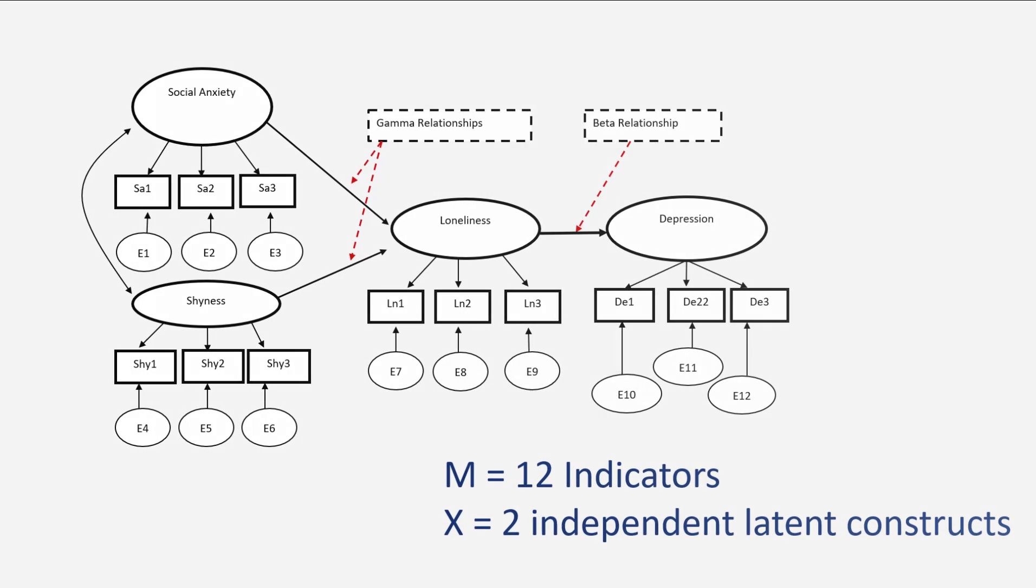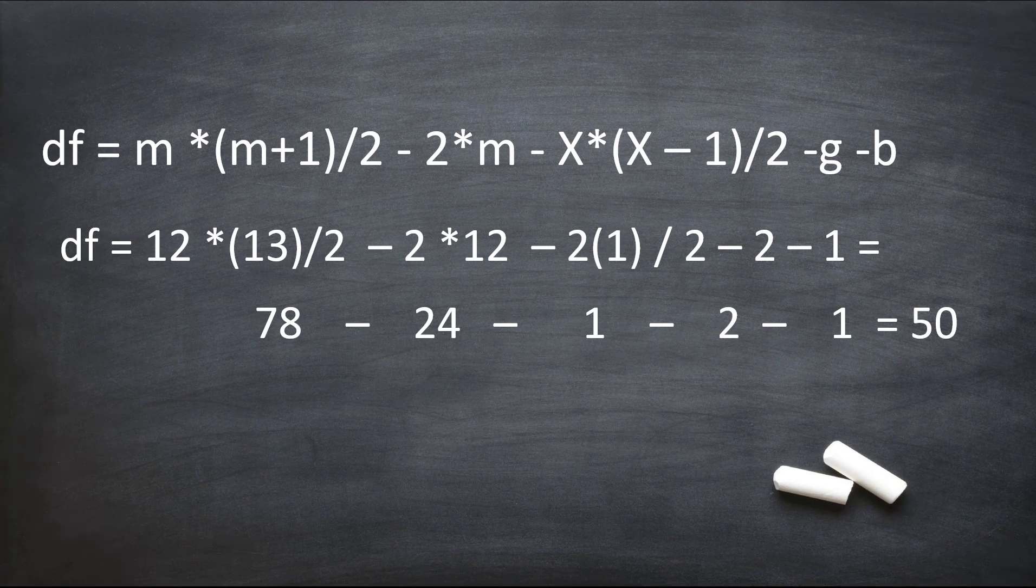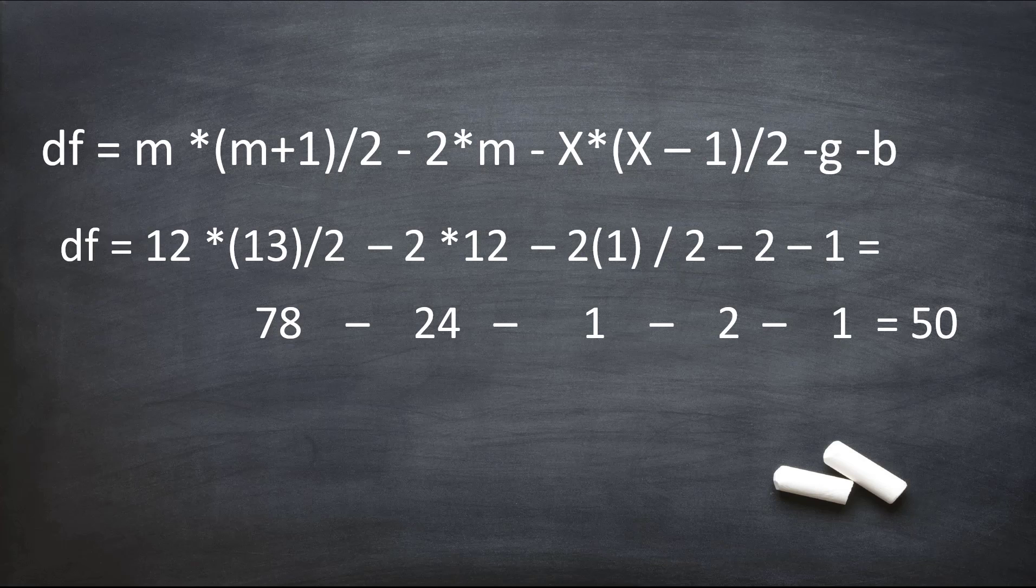Let's plug this into our formula. The front half looks very similar as before: m times (m+1) divided by 2. We had 12 observables, so that gives us our max degrees of freedom. 2 times m—m was still 12. Then we get the free off-diagonal which was 1. Except now we subtract our gamma relationships—we had two of those—and we subtract a beta relationship—we had one of those. Now we can see our degrees of freedom are 50. There's 50 degrees of freedom in that model.